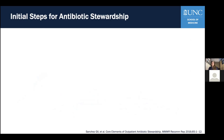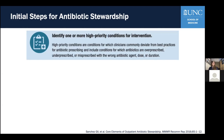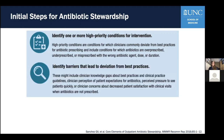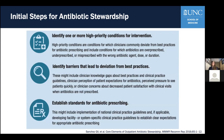Improving antibiotic use is a very large task. Fortunately, there are multiple guideline documents outlining the core elements of stewardship. The WHO and CDC both have guidelines specific to resource-limited settings. Almost all core element documents identify figuring out high-priority conditions for intervention as one of the first steps — conditions where antibiotics are over-prescribed, under-prescribed, or mis-prescribed. The next step is understanding the gold standard practice for those conditions, then identifying barriers that lead to deviation from that standard.